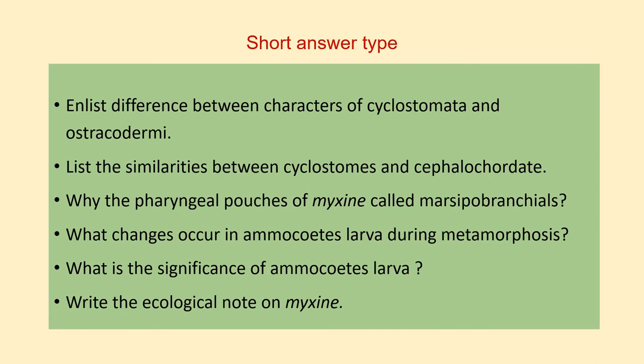In this section, we will take short answer type questions, and you have to answer usually in a single paragraph. It should be concise and word selection is important to maximize the effect. The first question is: list the differences between the characters of Cyclostomata and Ostracodermi. The second question is: list the similarities between cyclostomes and cephalochordates — you have to compare the cyclostomes and cephalochordates.